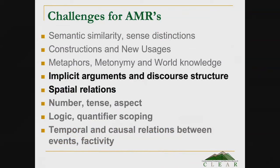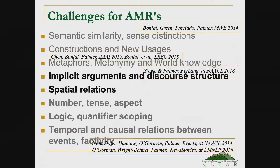Metonymy has been requested — at least to have it marked. 'You have to go to the bank today' — am I going to the facility or the institution? That's probably just named entity tagging, which may already be handled. I'm not saying we need to do all of these things — these are just open problems in semantics that AMR isn't necessarily solving for us: implicit arguments and discourse structure, spatial relations, number, tense and aspect, logic, quantifier scoping, and temporal and causal relations. But there has been a lot of progress on quite a few of these.